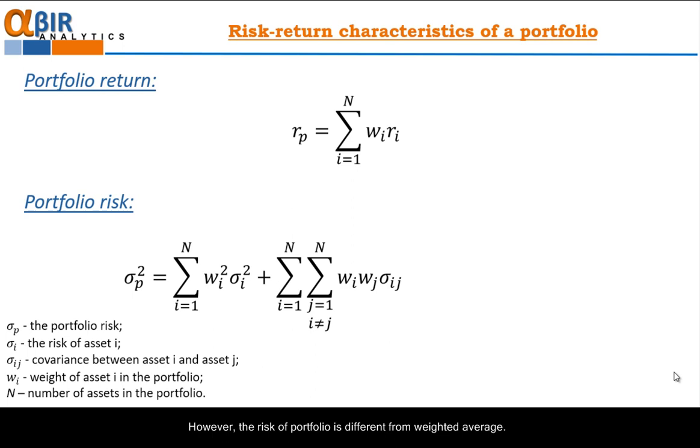However, the risk of portfolio is different from weighted average. As we can see, the risk of portfolio consists of two parts. Yes, it involves the weighted average of the individual risk of assets, this part here. But the most efficient part of the formula is the second part, the covariance between assets. Exactly this part gives the magic characteristics of portfolio management. Because it allows combination between very risky assets to result in less portfolio risk, if the covariance is negative or small.